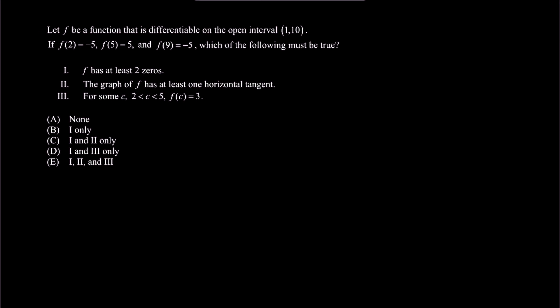The second example is a multiple choice question. Given that x ranges from values between 1 and 10, and we have f of 2 is negative 5, f of 5 is 5, and f of 9 is negative 5, we can plot these points on the graph creating a curve that passes through them.